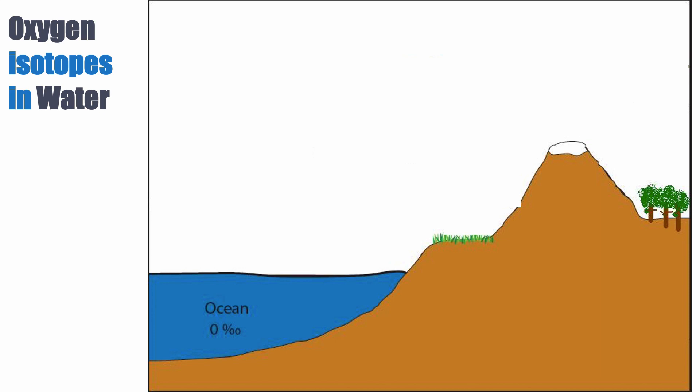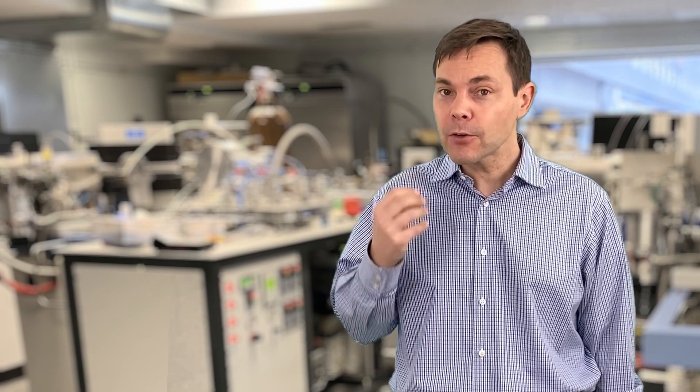In the tropical ocean, typically what happens is we have evaporation, which essentially means that the water molecule needs to be taken from a liquid form and put into a vapor phase. So you have a change of phase. That's the important concept here — every time we have a change of phase, we have fractionation of the isotopes.